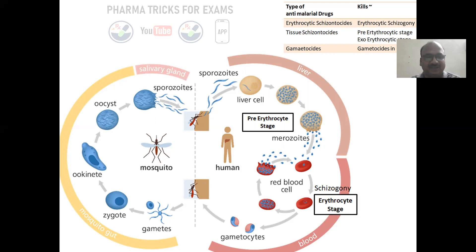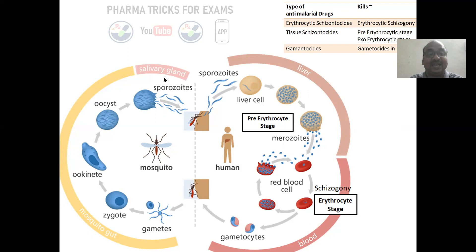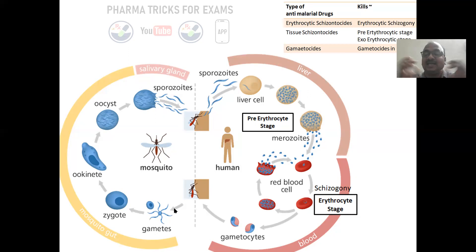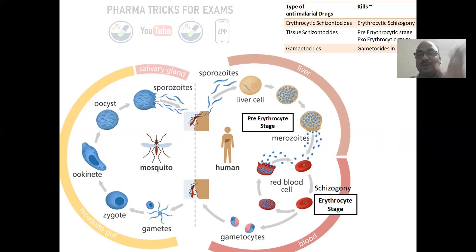In this diagram, this side is the malarial parasite human life cycle — 50% — and this side is the malarial parasite mosquito life cycle — 50%. If you combine together you get one complete life cycle. It starts when the mosquito gives a bite to the human being.